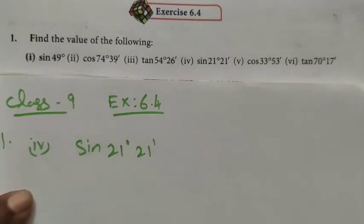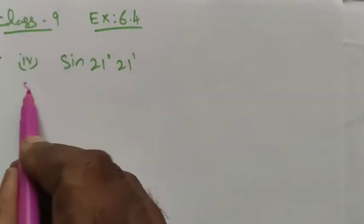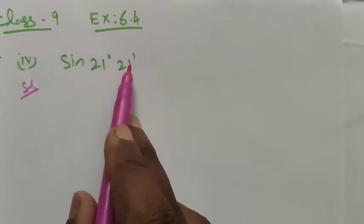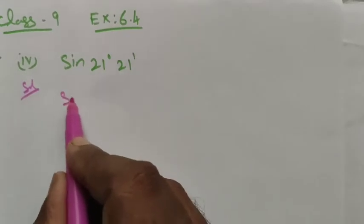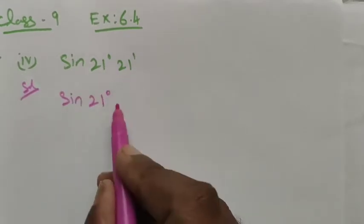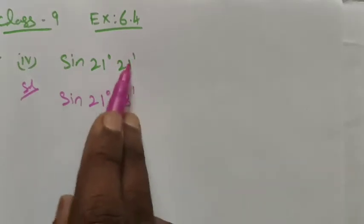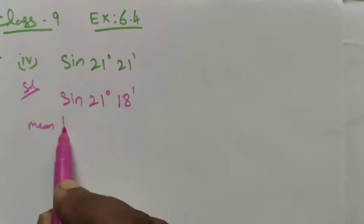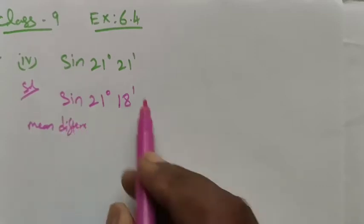The fourth roman number, that is sin 21 degree 21 minutes. See here, sin 21 degree we can find out, but 21 minutes directly we cannot be able to find out. So we take it as sin 21 degree, the nearest multiple of 6, which is 18 minutes. So the mean difference is 3 minutes.